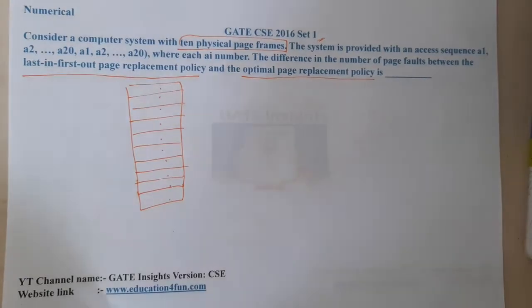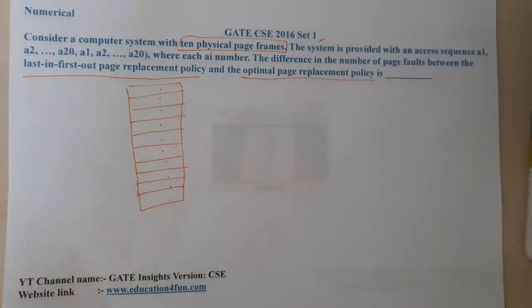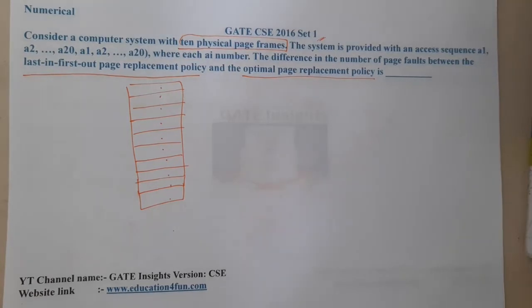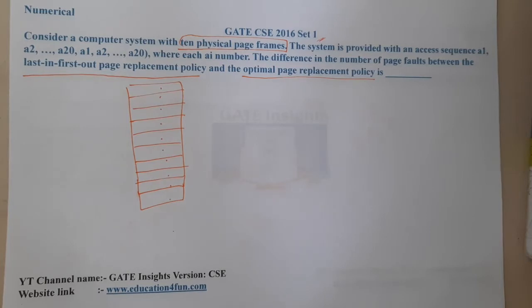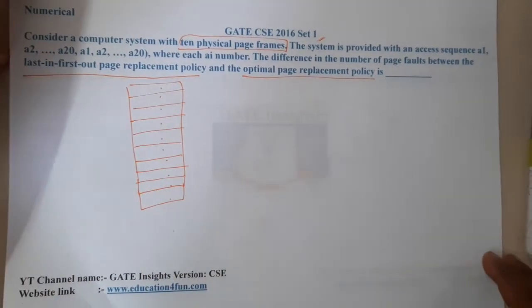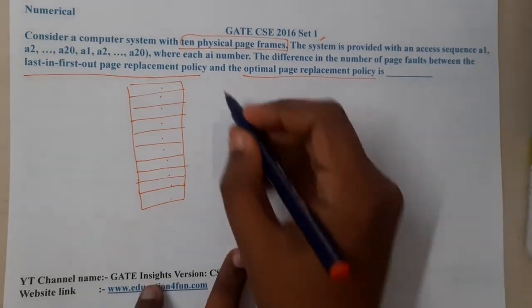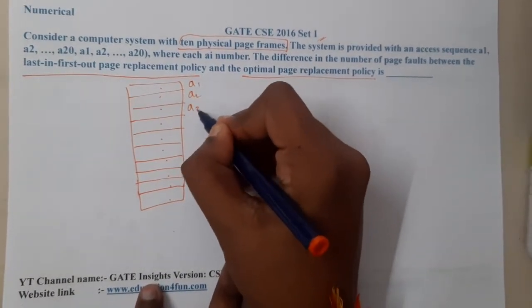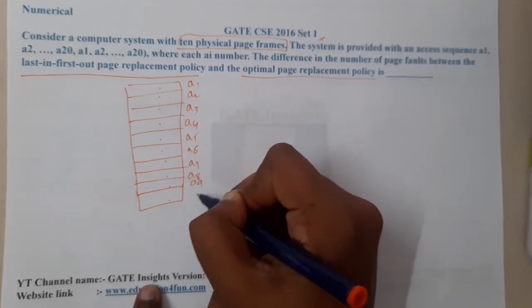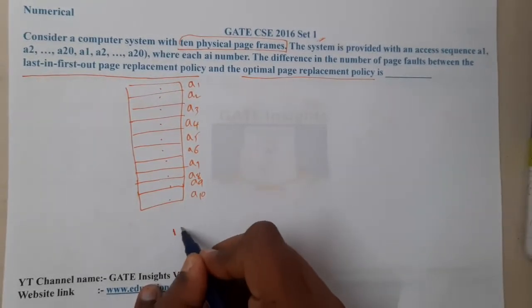Let us analyze this question. With Last-In-First-Out replacement — note we did not discuss this algorithm in our regular lectures. Initially, a1 will take its place, then a2, a3, a4, a5, a6, a7, a8, a9, a10 — so these are the first 10 mandatory page faults.